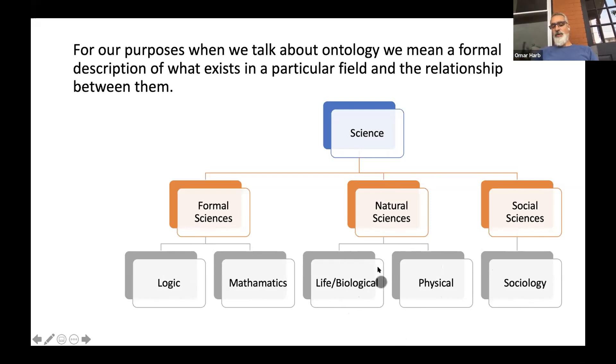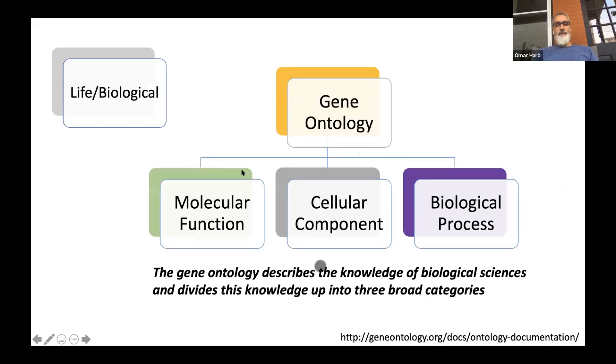If we look at life and biological sciences, there is a pretty cool ontology that describes life and biological sciences, and that's the gene ontology. The gene ontology describes the knowledge of biological sciences and divides that knowledge into three broad categories: molecular function, cellular component, and biological process.